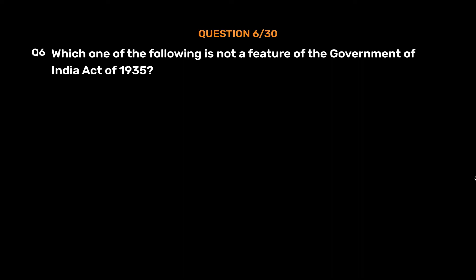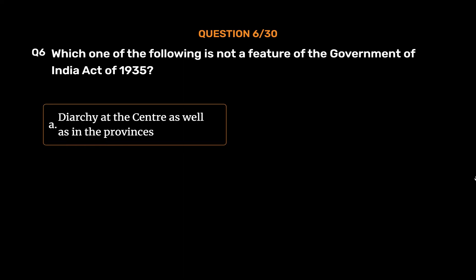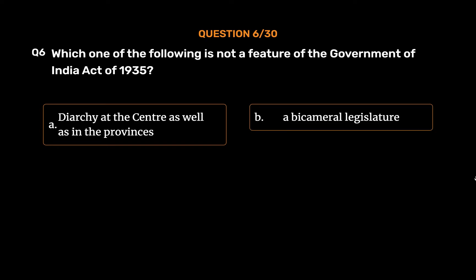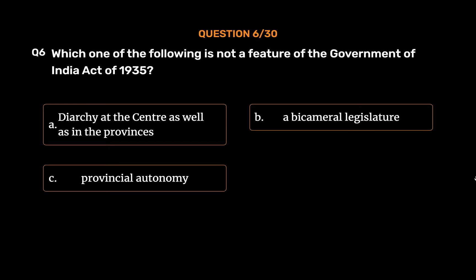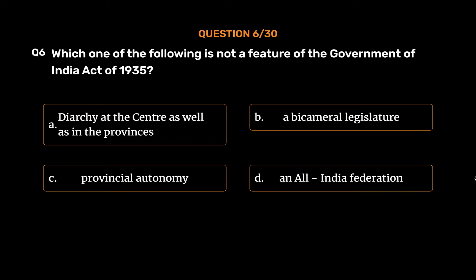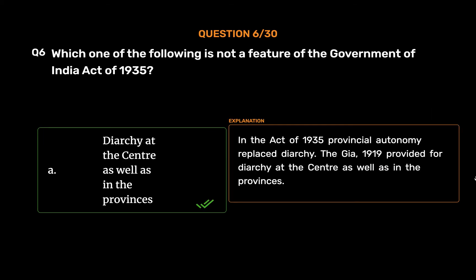Question No. 6. Which one of the following is not a feature of the Government of India Act of 1935? Option A: Dyarchy at the centre as well as in the provinces. Option B: A bicameral legislature. Option C: Provincial autonomy. Option D: All-India Federation. The correct answer is Option A: Dyarchy at the centre as well as in the provinces. In the Act of 1935, provincial autonomy replaced Dyarchy. The Government of India Act 1919 provided for Dyarchy at the centre as well as in the provinces.